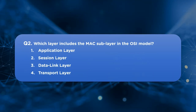Let's take another question: which layer includes the MAC sub-layer in the OSI model? Option 1: Application layer. Option 2: Session layer. Option 3: Data link layer. Option 4: Transport layer. You can give your answers in the comment section below.